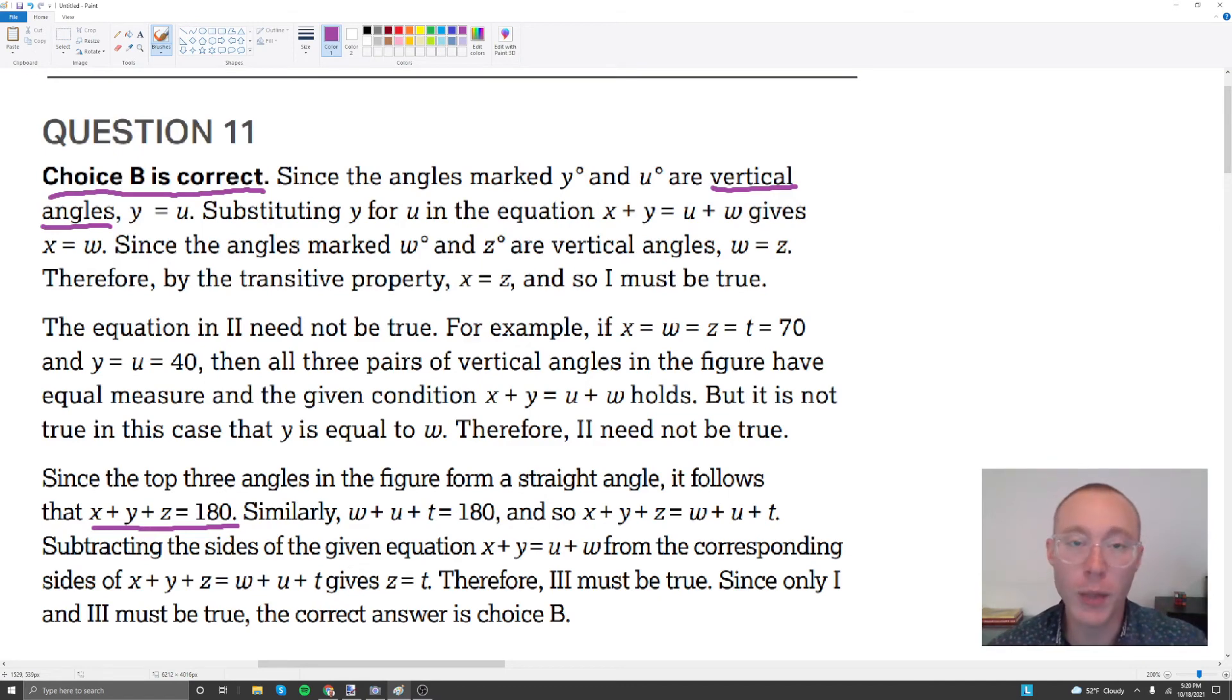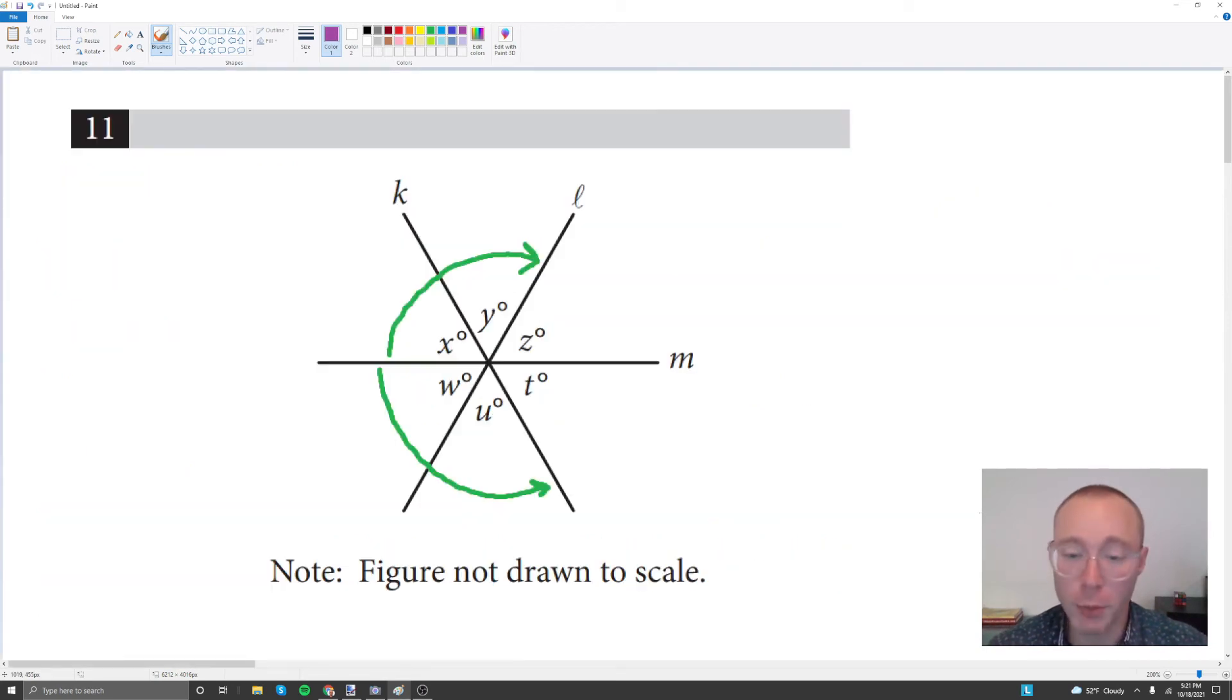However, I just feel that if you can think visually about this problem, you'll be able to get it a lot quicker than if you go ahead and use this reasoning that the SAT book is offering, which is going to require you to set up a bunch of statements off to the side and sort of prove or disprove Roman numerals one, two, or three. So that's pretty much it for my explanation of problem 11.